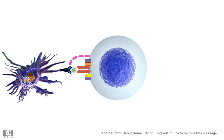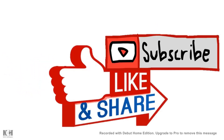So that is how we understand that a hapten, when conjugated with a proper carrier, can elicit an immune response. I hope you enjoyed this video — if you liked it, give it a thumbs up and don't forget to like, share, and subscribe.